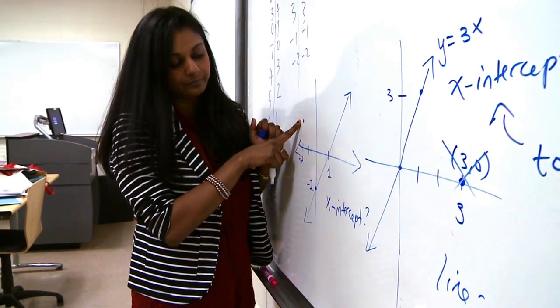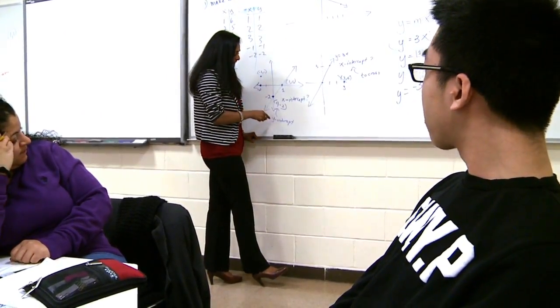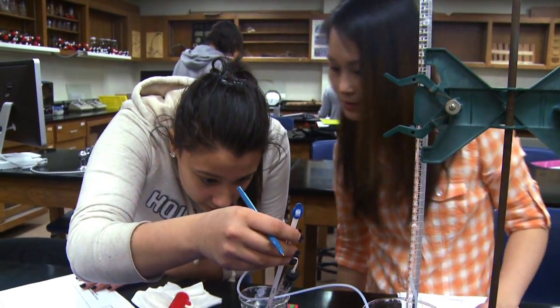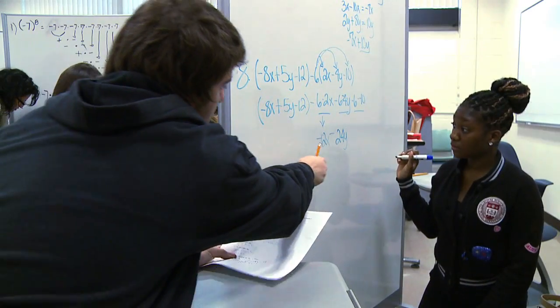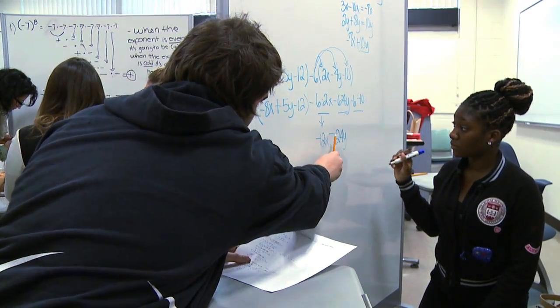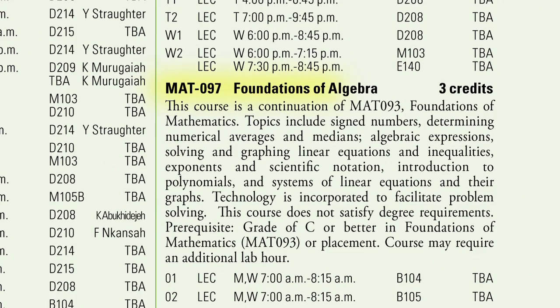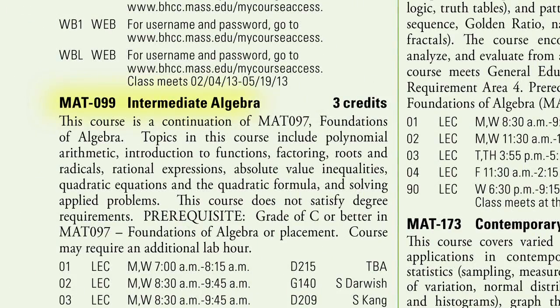Our developmental math program consists of a three-course pathway for science, technology, and math majors, and only a two-course pathway for everyone else. The courses we offer are MAT093 Foundations of Mathematics, MAT097 Foundations of Algebra, and MAT099 Intermediate Algebra.